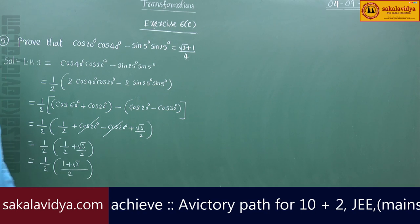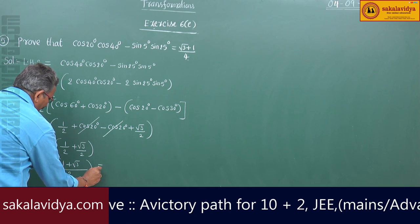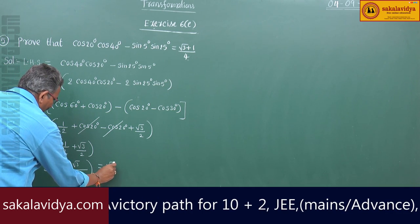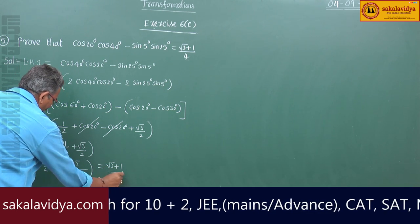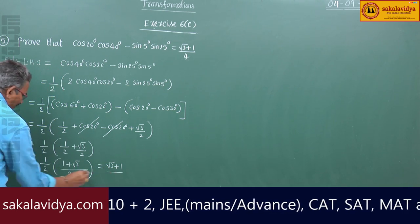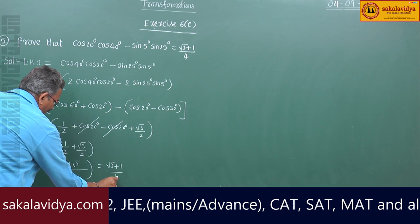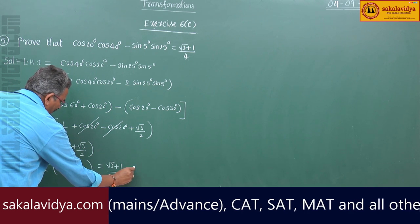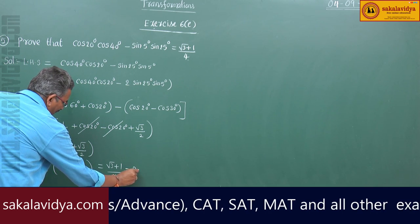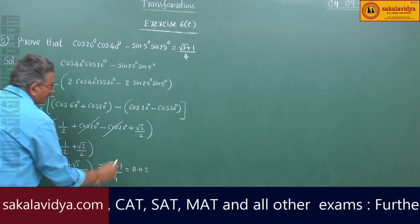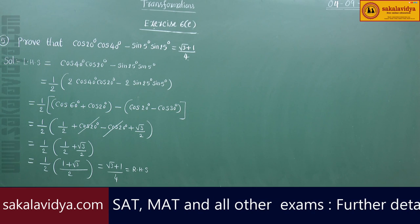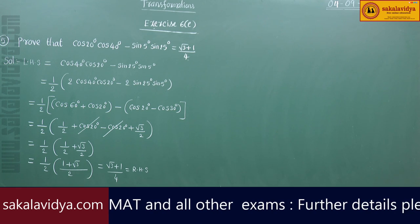So now this equals (1/2) × (1+√3)/2 = (√3+1)/4, which equals the right hand side. Now let us move to the next problem.